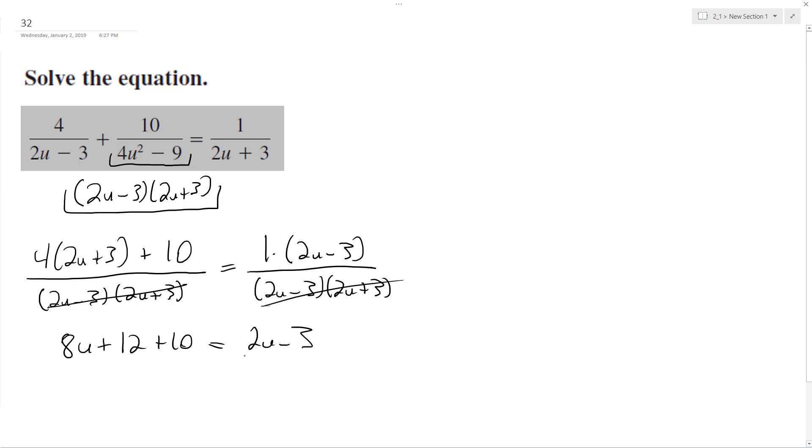All right, combine like terms, so minus 2u, minus 2u. And then get all the constants on one side, that's 22. So we end up with 6u is equal to negative 3 minus 22, which is negative 24.